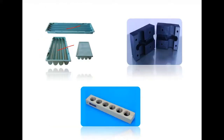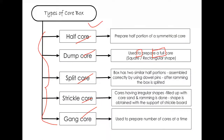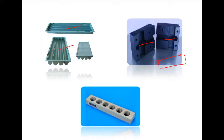The split core box looks like a die — two half portions are prepared, the die is closed, sand is kept inside, and finally it is removed. For strickel core, if you want a concave or convex shape, with the support of a strickel board you get the shape. Cores having irregular shapes are filled with coarse sand, ramming is done, and shape is obtained with the strickel board. The split core box has two similar half portions assembled correctly using dowel pins. After ramming, the box is split open.